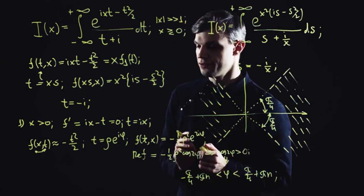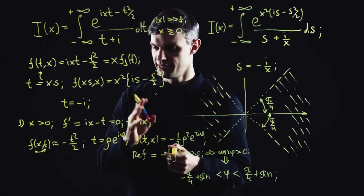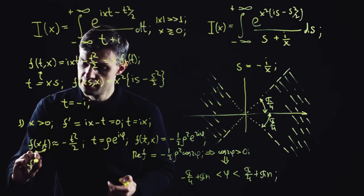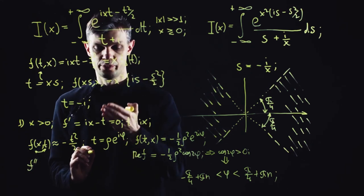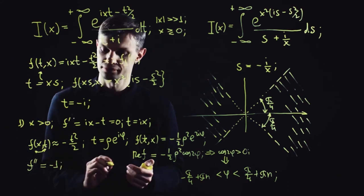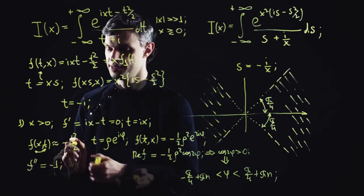Now let's figure out the steepest descent direction for our saddle. So to do so, we need to compute the second derivative, which is negative 1.